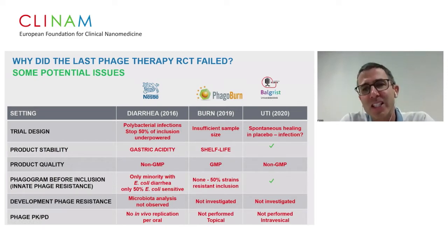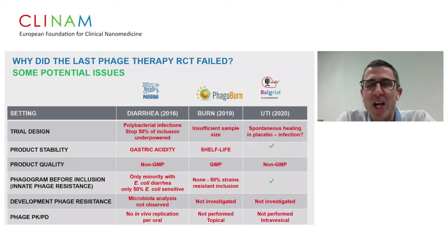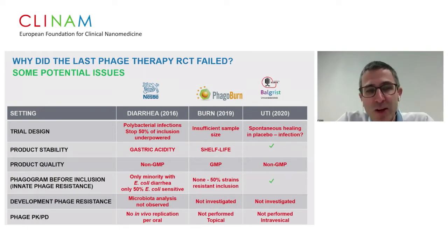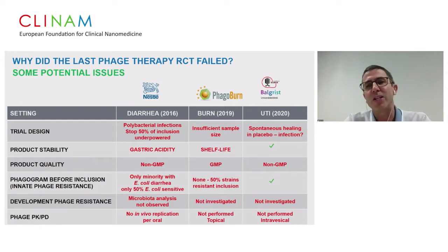The third RCT investigated phage for treatment of urinary tract infections. The problem in the trial design was that the placebo group was doing well — even better than either the antibiotic treatment group or the phage treatment group — raising questions about whether the right patient population was selected and whether the patients were truly infected. The product was not GMP-conformed. A phagogram was done before inclusion, so that was not a drawback. But phage resistance development was not examined, PKPD was not performed, and phages were given intravesically.